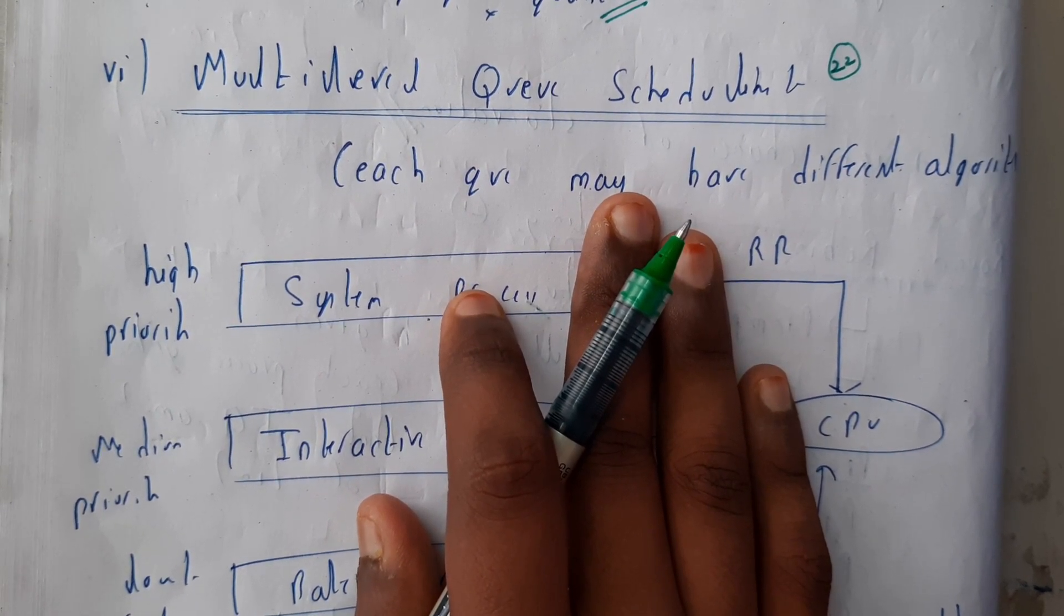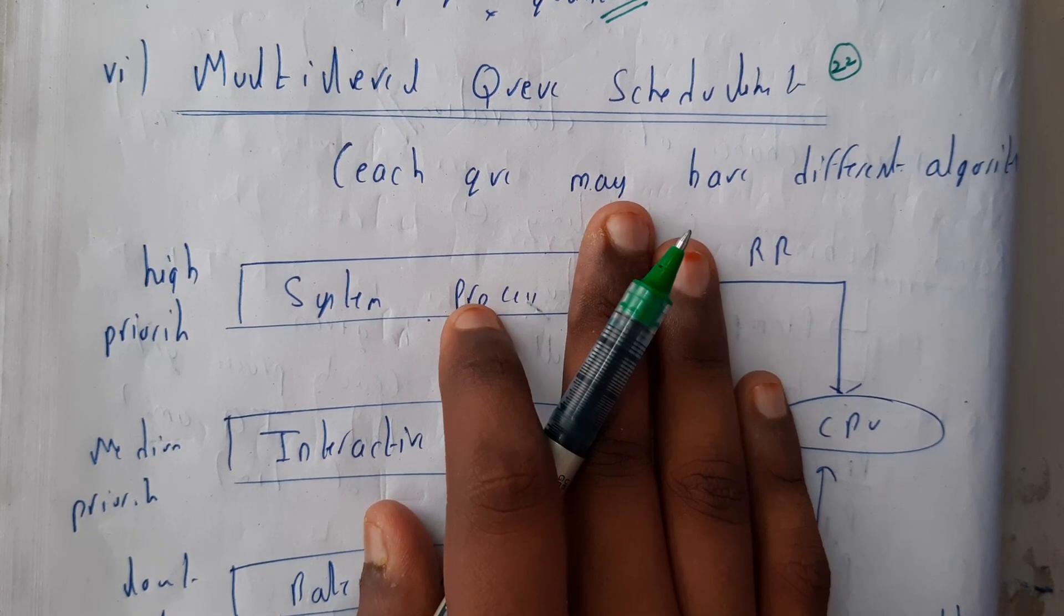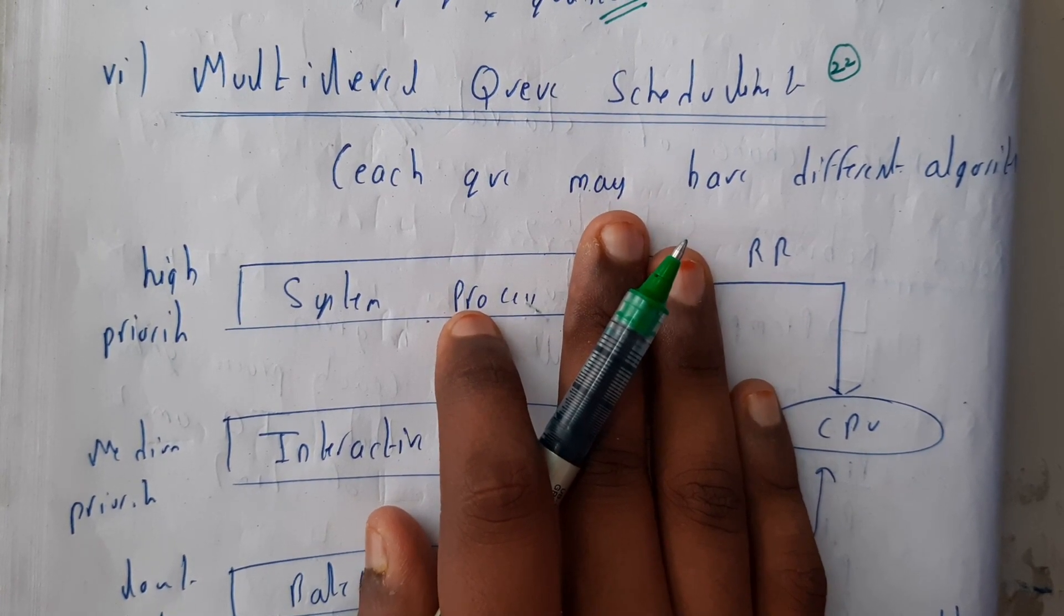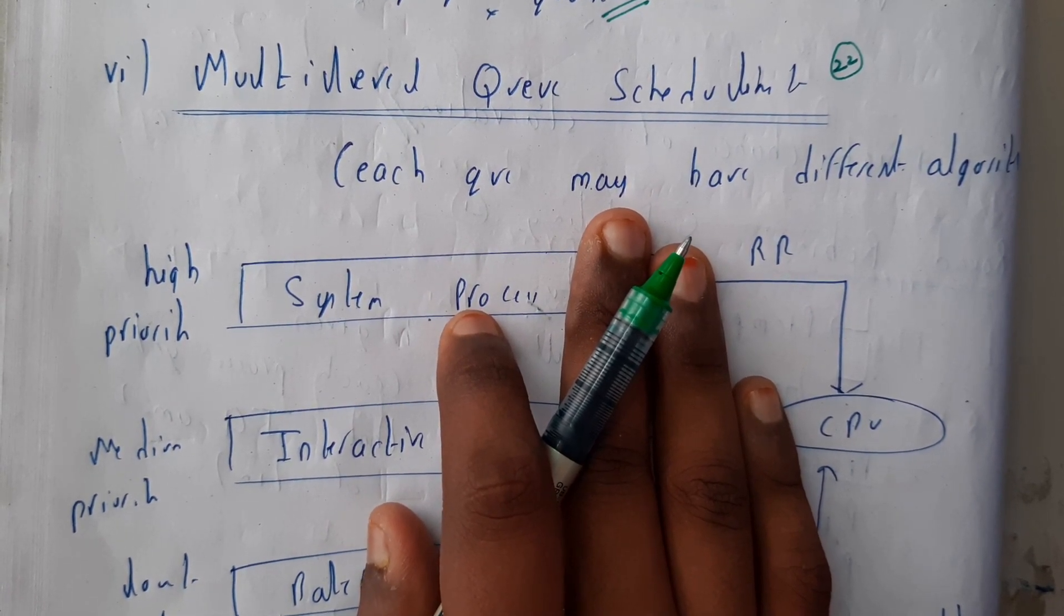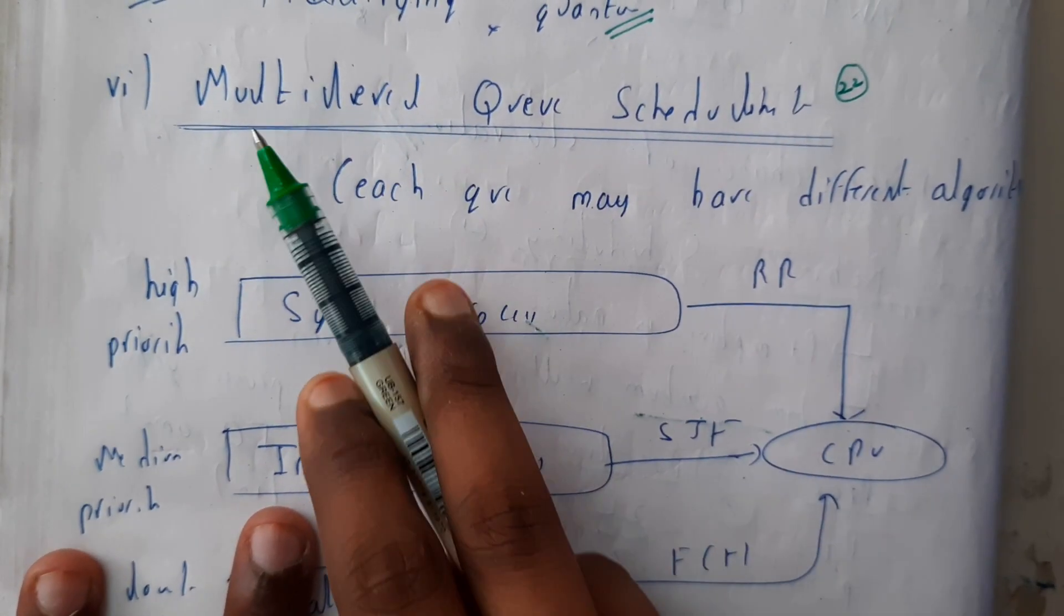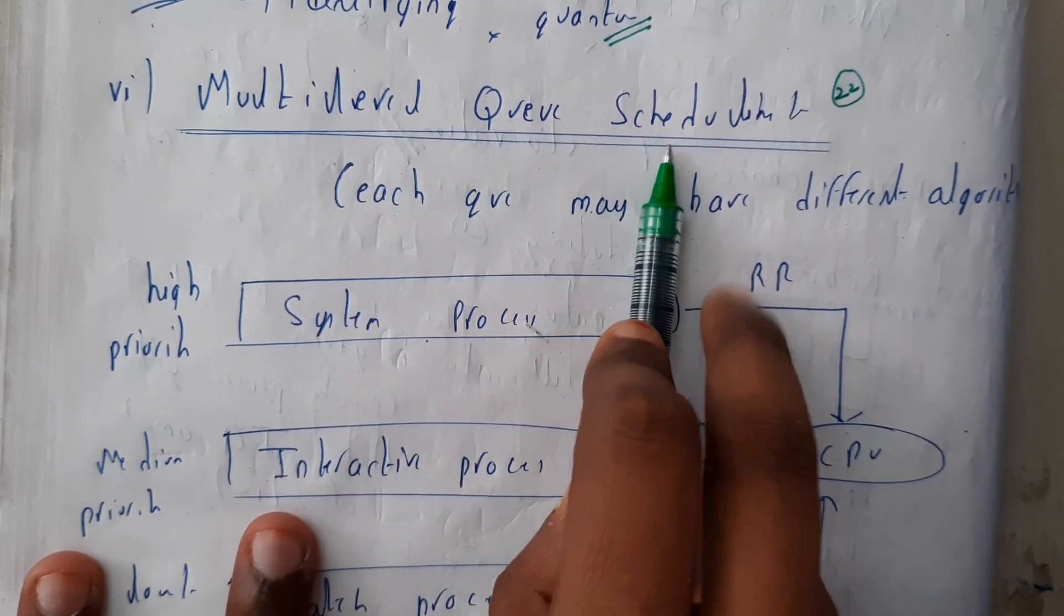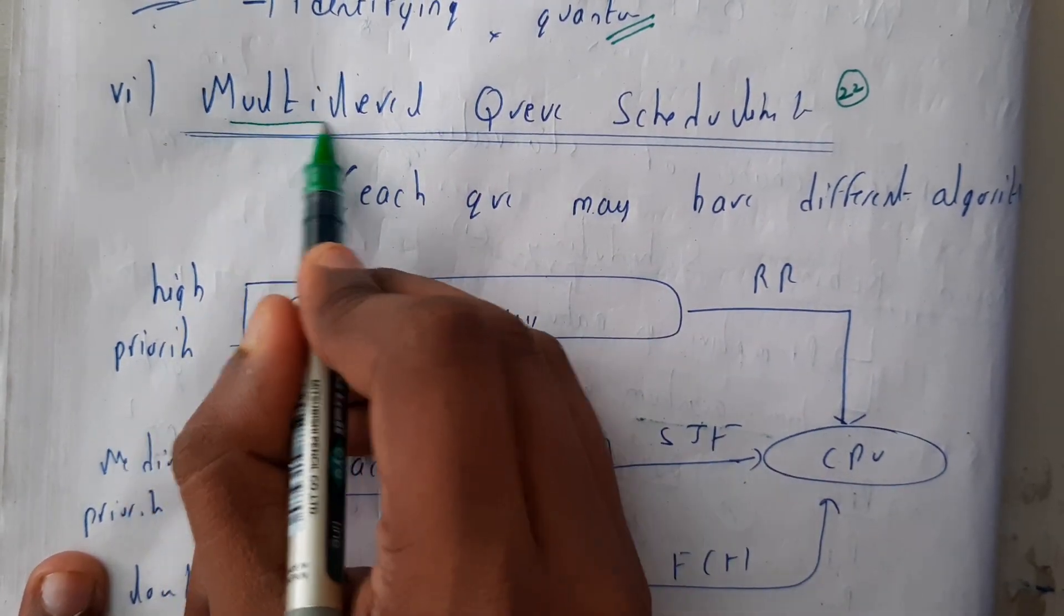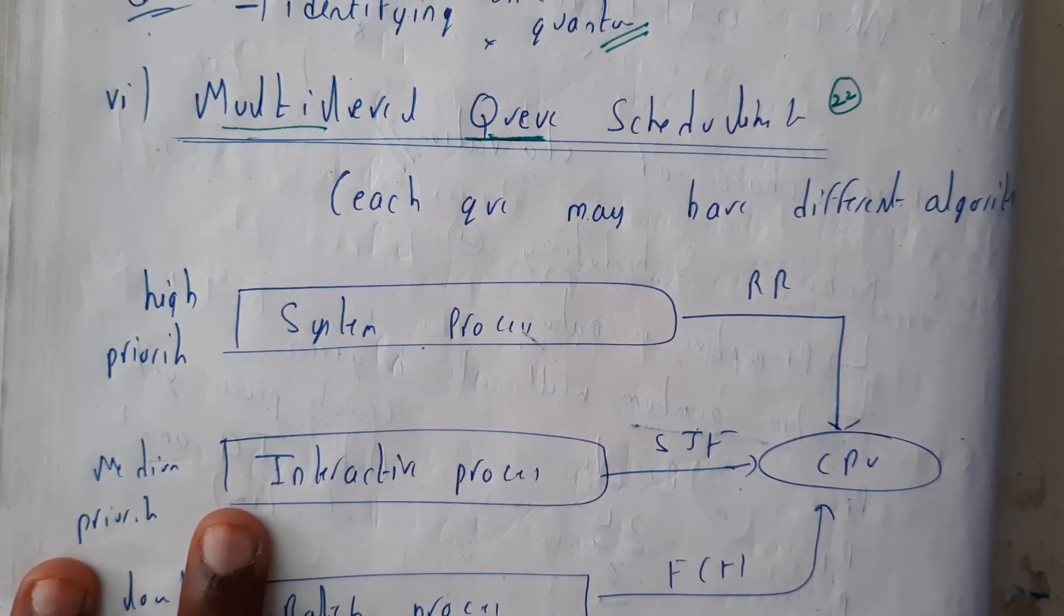The problematic questions are not in our syllabus and they will not be asking these because there are no problems basically on these things. So basically, we'll be going through the basic theory of these things. Multilevel queue scheduling - from the name itself we can say there are multiple queues, so there will be multiple number of queues.